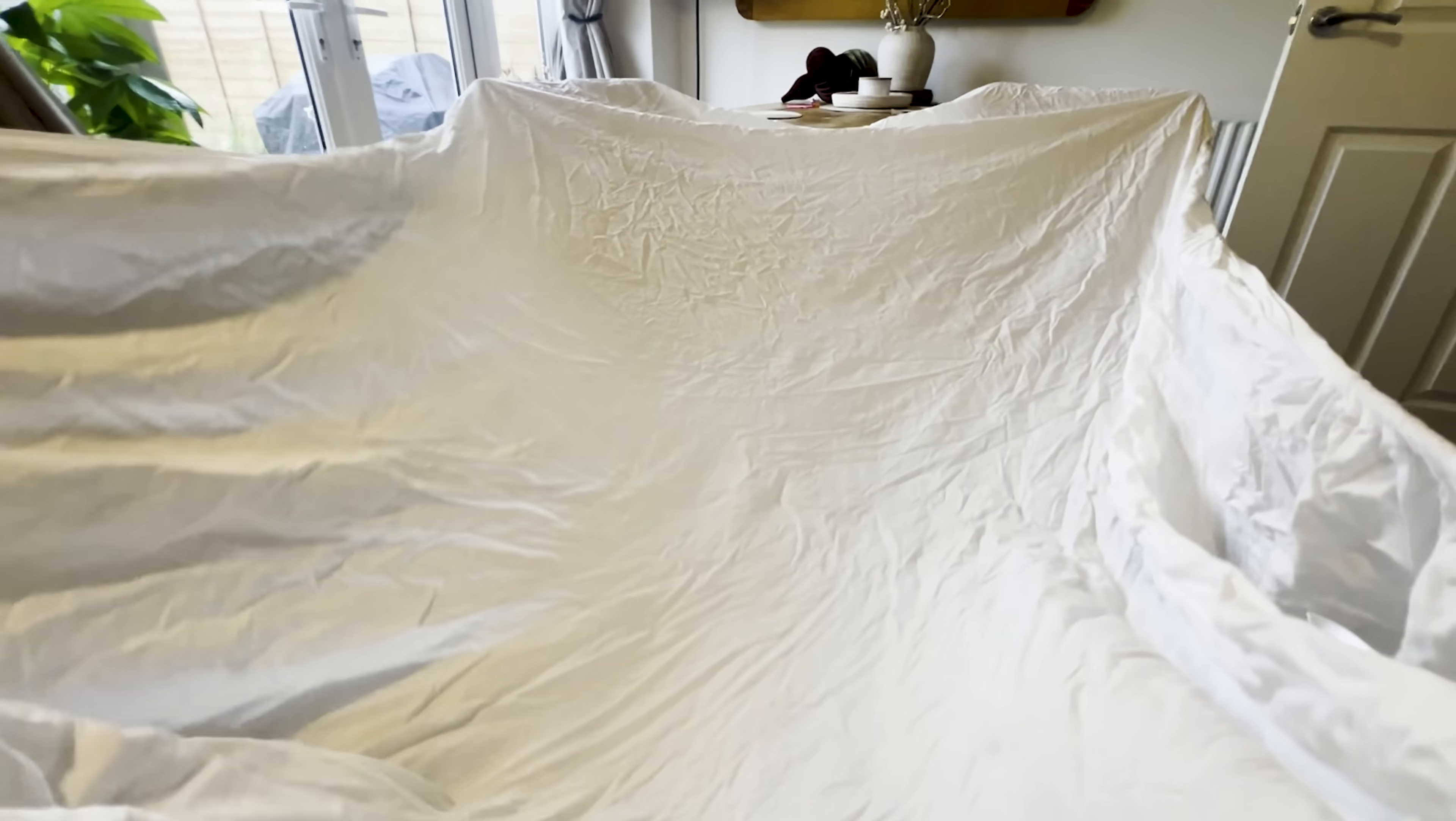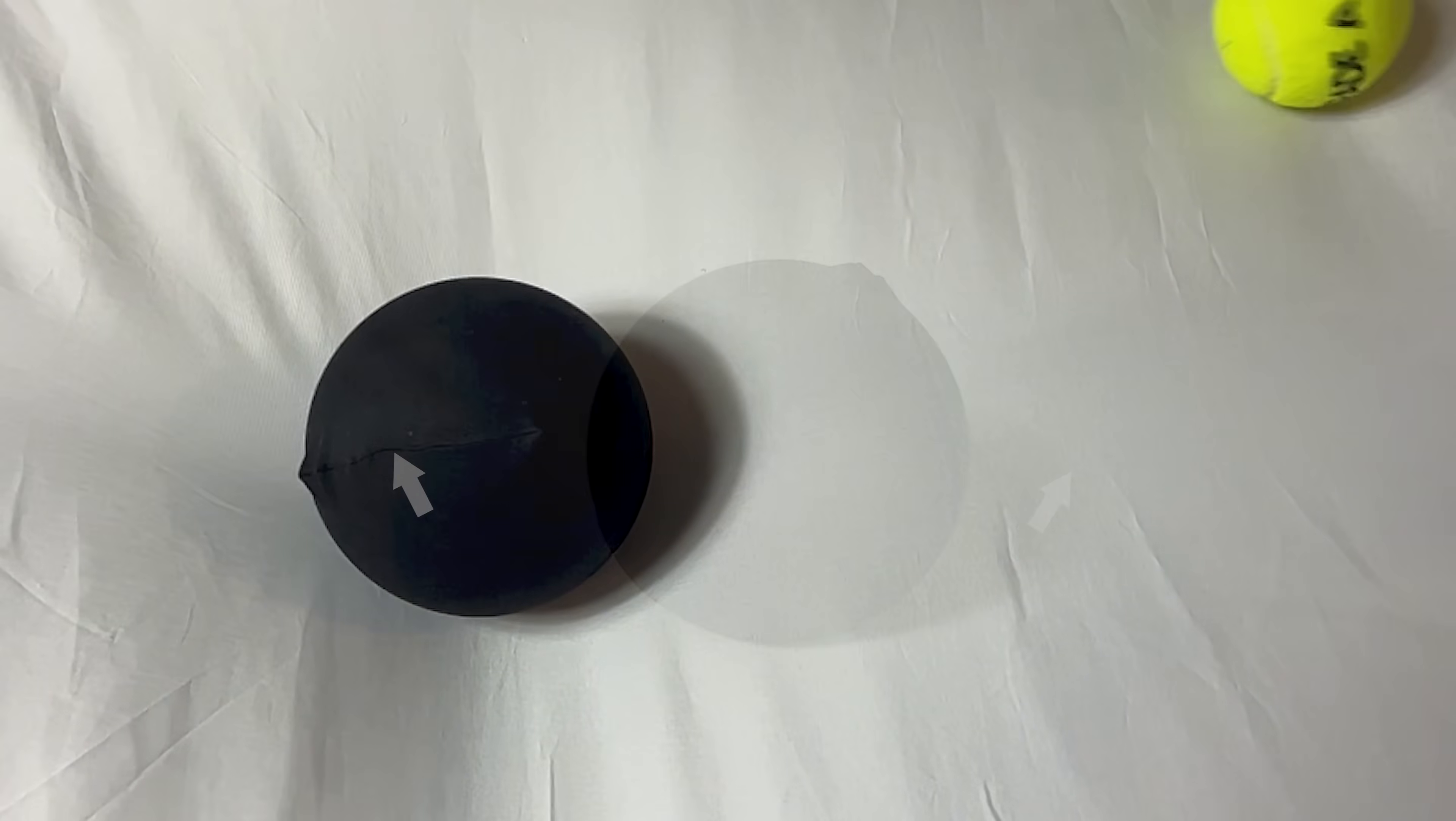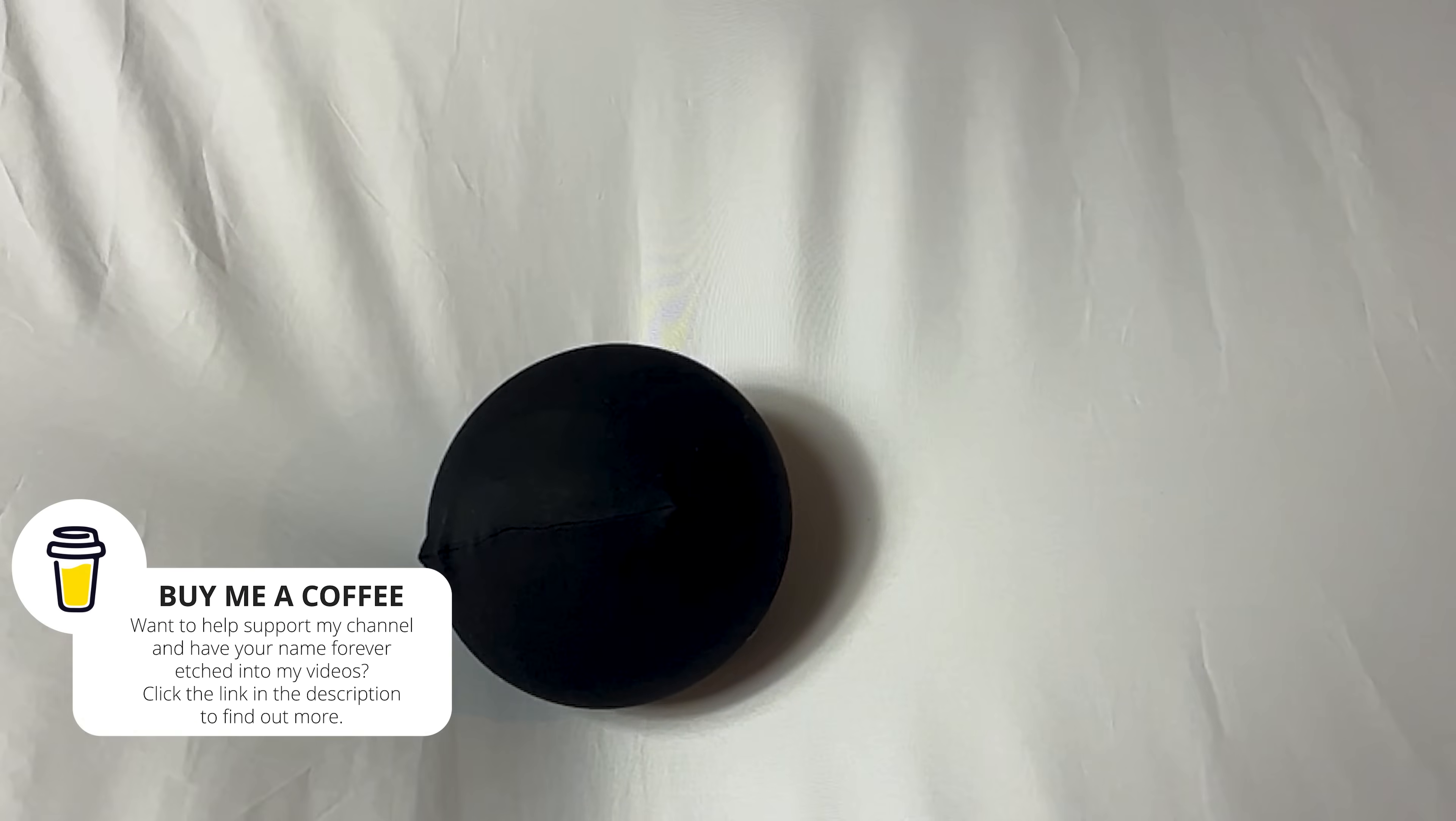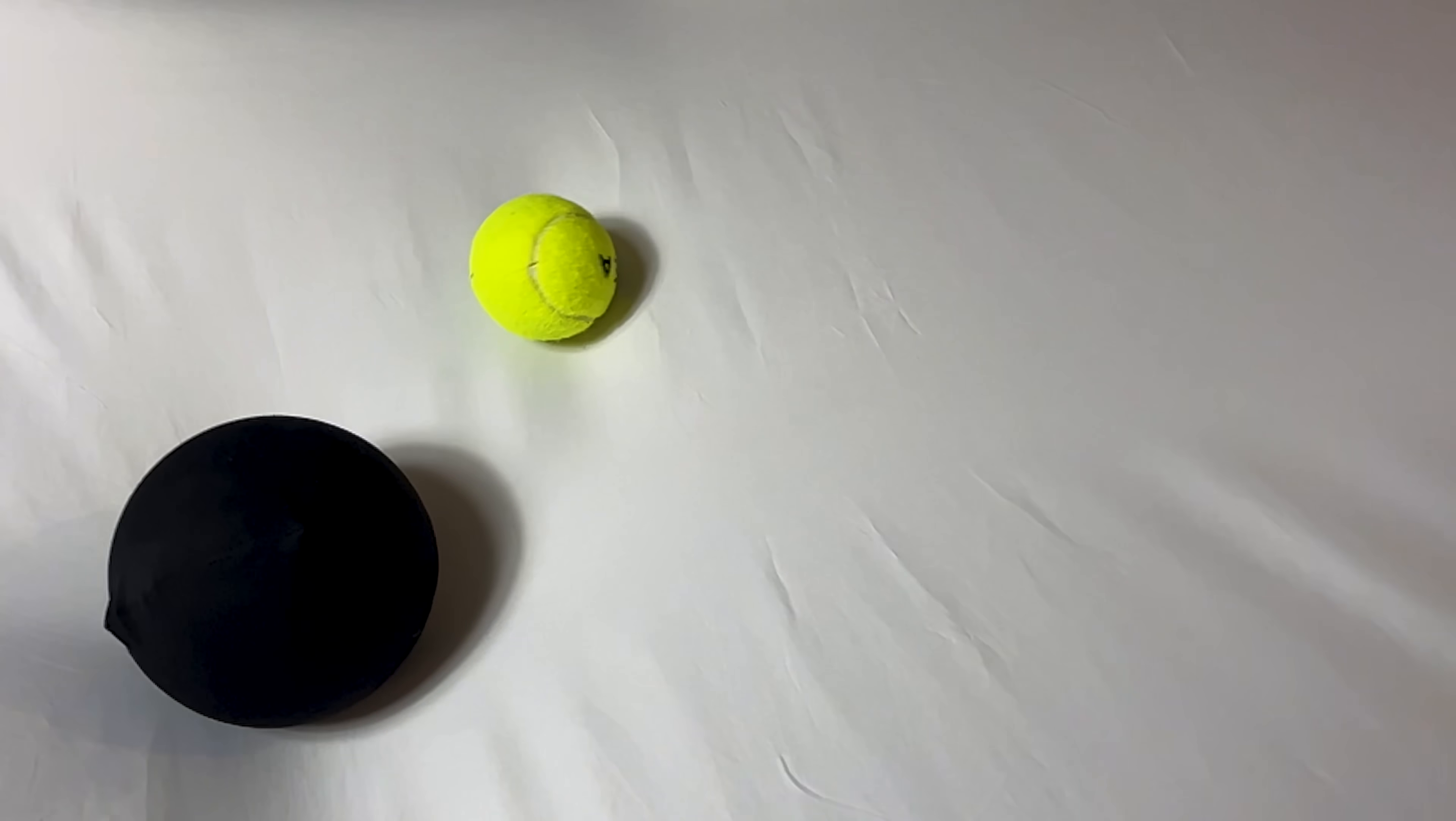To see how this works, imagine taking the sheet off your bed and holding it tightly at the four corners. Next, place a heavier ball in the center to represent the earth. The sheet will sag and dip in the middle. You could then roll a tennis ball around the rim of the dip. In other words, you made the tennis ball orbit the heavier ball. Crucially, there was no pull involved. The heavier ball wasn't pulling on the tennis ball. Instead, the tennis ball just followed the curvature of the sheet caused by the presence of the heavier ball. From the outside, this looks like the pull of gravity. But there is no such thing. It's a mirage.